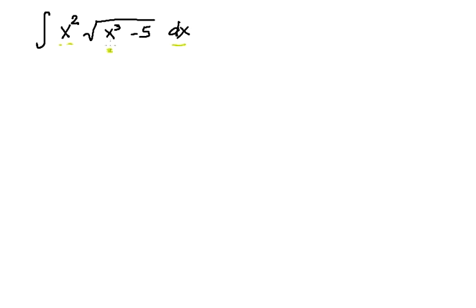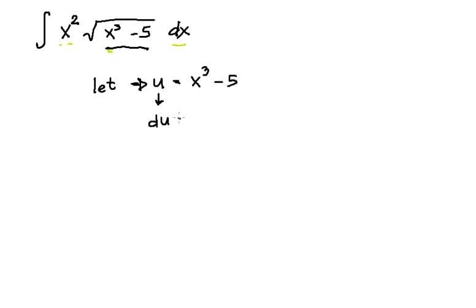So, let us use this term here as u. We let u equal to x cubed minus 5, and then we take the derivative. We have du equal to 3x squared minus 0 plus 0, dx. From here, we can say our u is this one, and our du here is 3x squared dx.